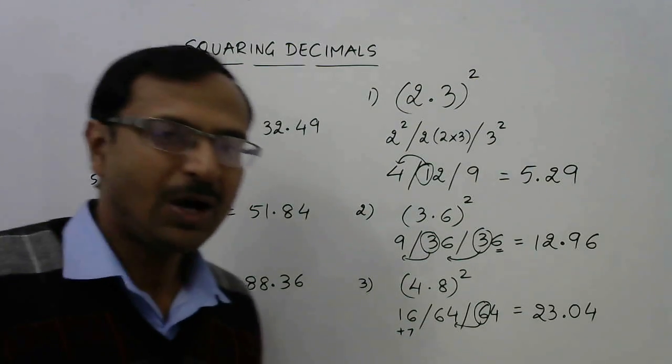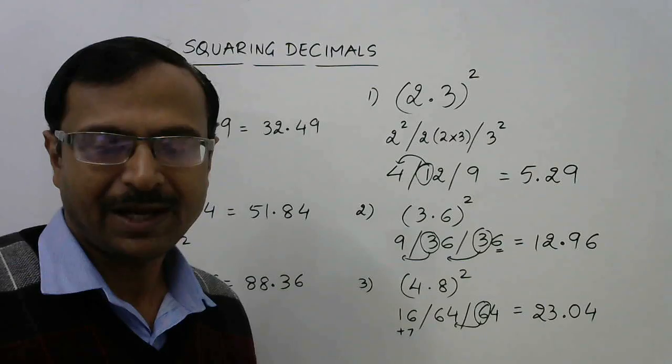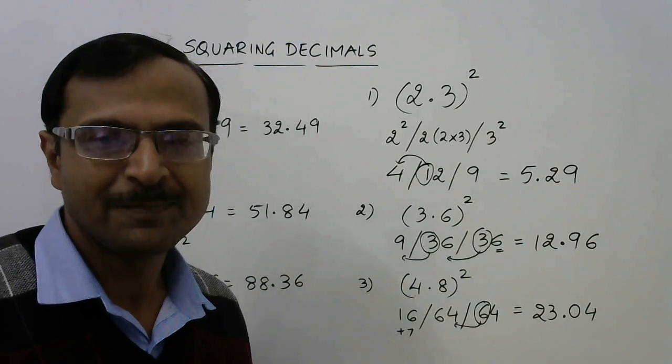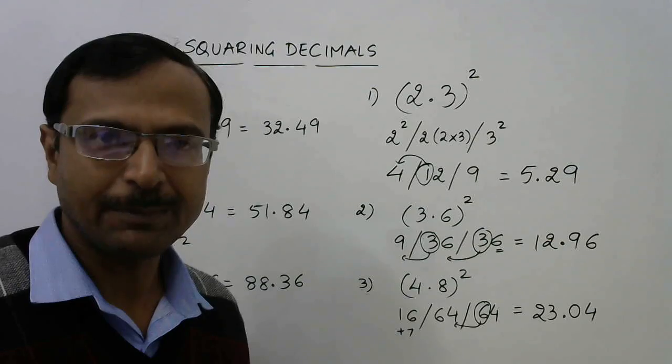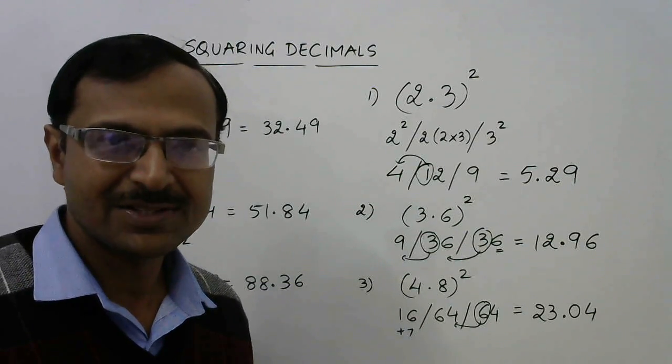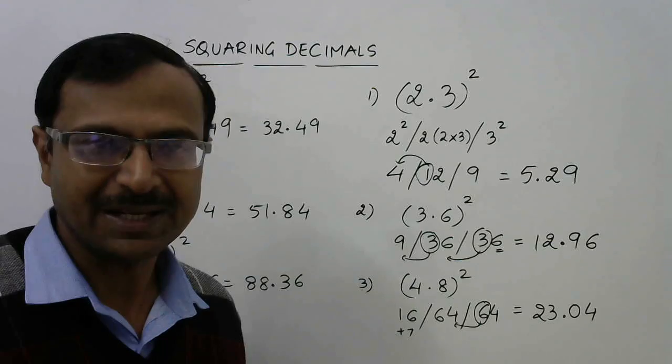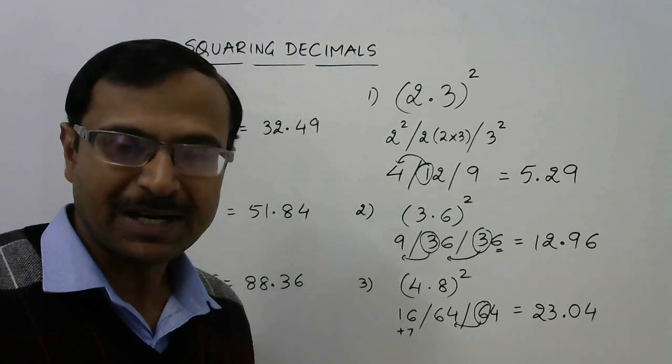So friends, how much time are you going to take to calculate the squares of such numbers? I am sure with the practice of 10 minutes and solving 20 to 30 such examples, you will feel comfortable in finding the squares of such numbers within 3 seconds or maximum 4 seconds. Friends, if you like this video do share it with your friends and do not forget to subscribe the channel.